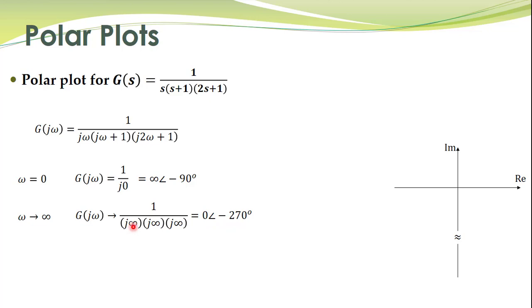The minus 90 degrees comes from the first j factor, minus 90 from the second j, and minus 90 from the third j. Since the factors are multiplied, their angles are simply added: minus 90 plus minus 90 plus minus 90 gives minus 270 degrees.